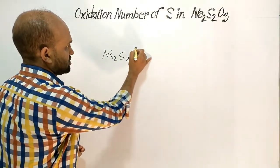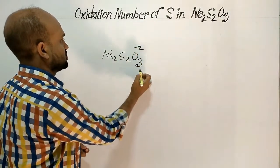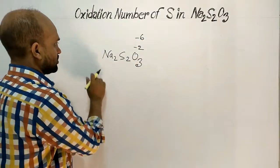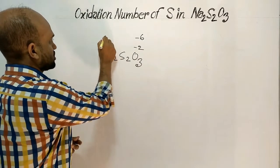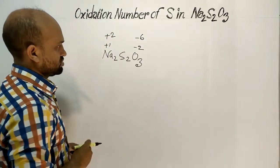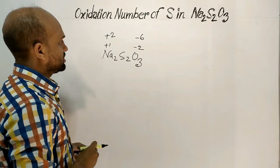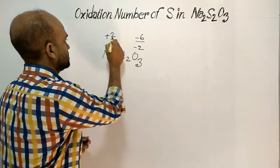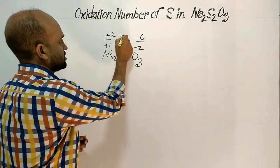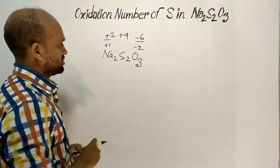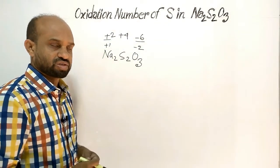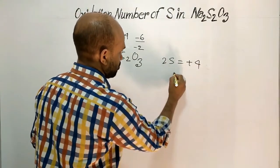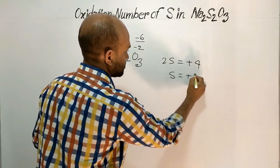Oxidation number of oxygen is minus 2, total minus 6. Oxidation number of sodium is plus 1, total plus 2. So we need another plus 4 — this is minus 6, this is plus 2, so we need another plus 4. With 2 sulfur atoms giving plus 4, so one sulfur atom is plus 2.